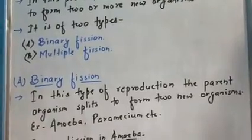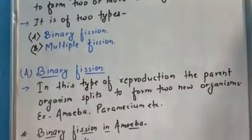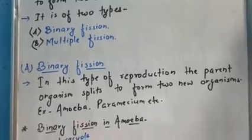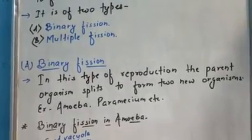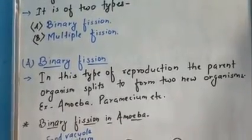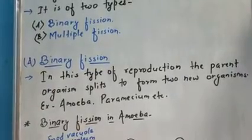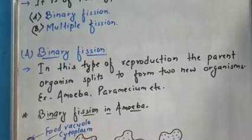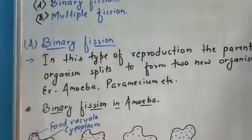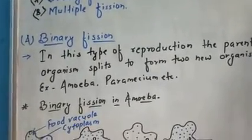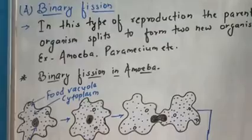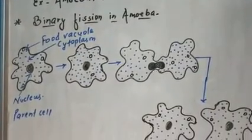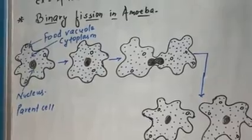First, binary fission: in this type of reproduction, the parent organism splits to form two new organisms. The parent cell is split into two, forming two individuals — like Amoeba, Paramecium, etc. Here is a diagram of binary fission in Amoeba as you are watching.